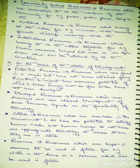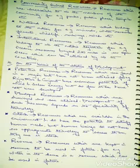The next one is community-owned resources. When we talk about the community, we are talking about the society. We include those resources which are accessible to all the members of the society or the community — which belongs to all of us. For example, a public park which belongs to each one of us, or any public places — it could be a temple, a mosque, a gurdwara, a cinema hall, a mall, or a restaurant which belongs to everyone in the society. That is what community-owned resources are.